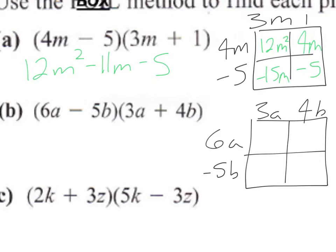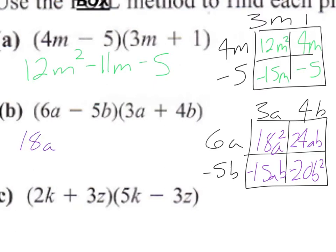The second example has A's and B's, but that doesn't change our approach at all. We get 18A squared, 24AB, negative 15AB, and negative 20B squared. Each of these is a second-degree term, and combining the AB terms gives 18A squared plus 9AB minus 20B squared.